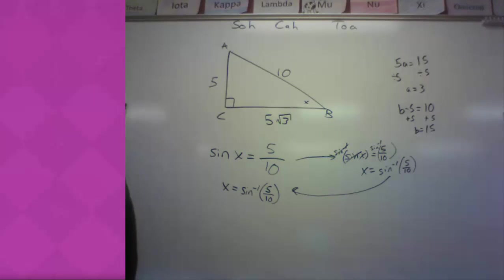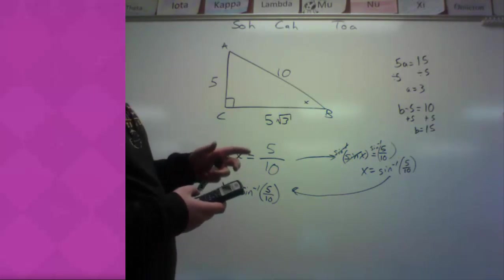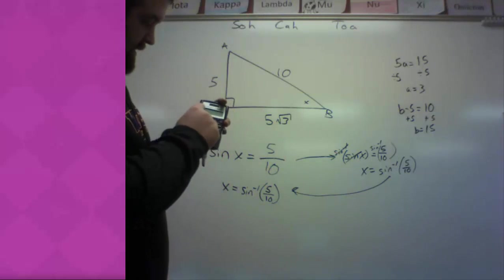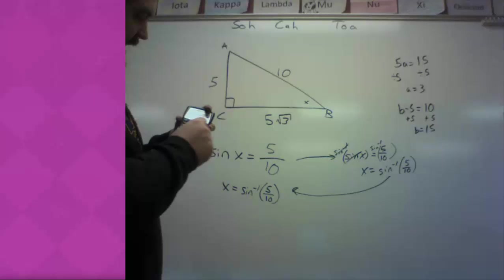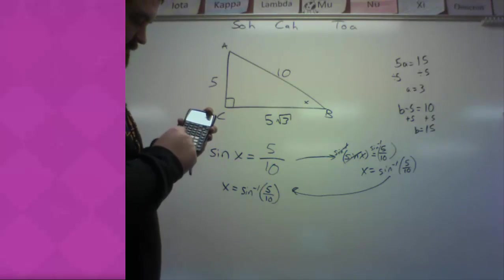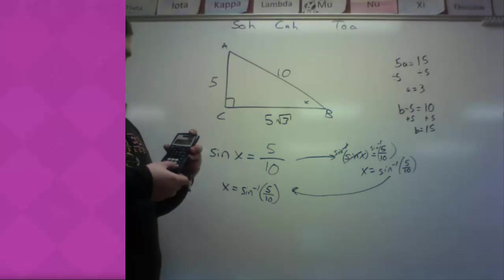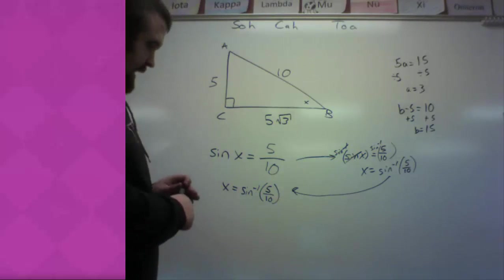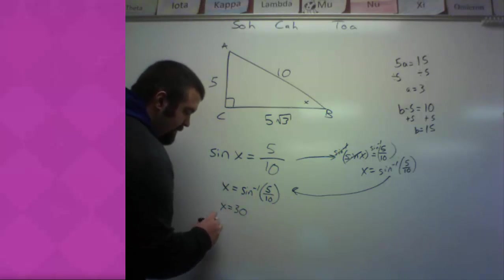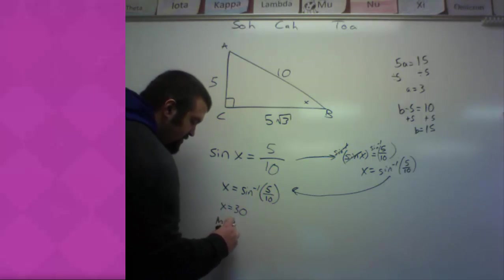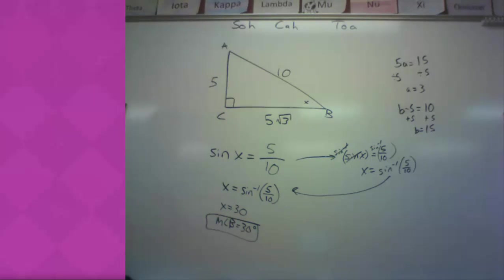Let's look. X is solved for. Do you know what the sine inverse of 5 over 10 off the top of your head is? Probably not. So, calculator time. Second. Sine. 5. Divided by 10. Close parentheses. Enter. And I am not surprised to find x to be 30. And remember, that's measure of angle B, which is what I was looking for. There we go. That's it.